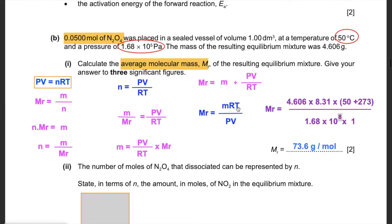Now substitute the values: mass = 4.606 g, R = 8.31, T = 323 K, P = 1.68 × 10⁵ Pa (note: here using Pa not kPa, so P becomes 1.68 × 10⁵), and V = 1 dm³. Entering this into the calculator gives 73.6 g/mol.